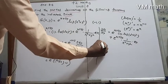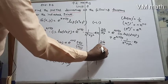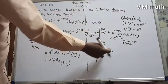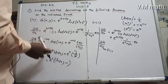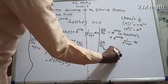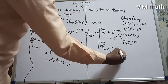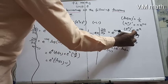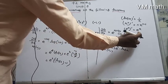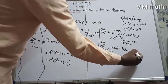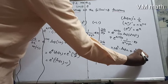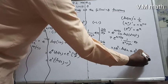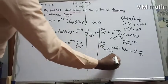Now substitute the point (-1, 1) into dg/dy. Just as we got e² for the x-case, here again we get e². So the expression becomes e² times 3 times log 2 — since 1² + 1² = 2 — plus e² times 2y/(x²+y²). Substituting y = 1 gives 2/2, which cancels to 1.